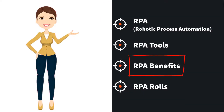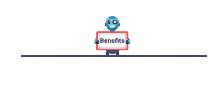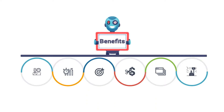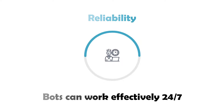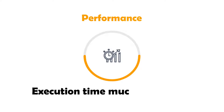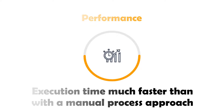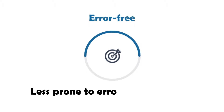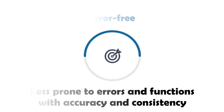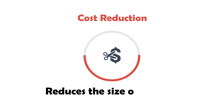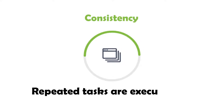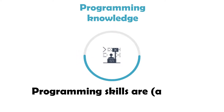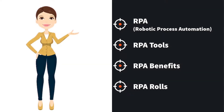Now we turn to the third point: RPA benefits. The main advantages of bots are: Reliability — bots can work effectively 24/7. Performance — execution time is much faster than with a manual process. Error-free — less prone to errors and functions with accuracy and consistency. Cost reduction — reduces the size of manual personnel and thus lowers costs. Consistency — repeated tasks are executed the same way each time. Programming knowledge — programming skills are almost not required.